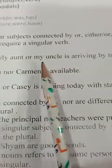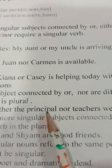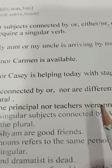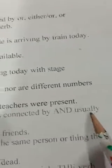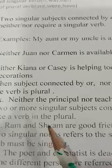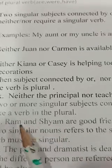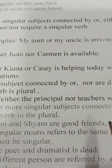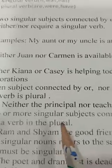So when two singular nouns are connected by 'or/nor', 'either or', 'neither nor', the verb is singular. But when the subjects connected by 'or/nor' are different in number, you will use a plural verb. Next rule: when two or more singular subjects are connected by 'and', they usually take a plural verb. Example: 'Ram and Shyam are good friends.'